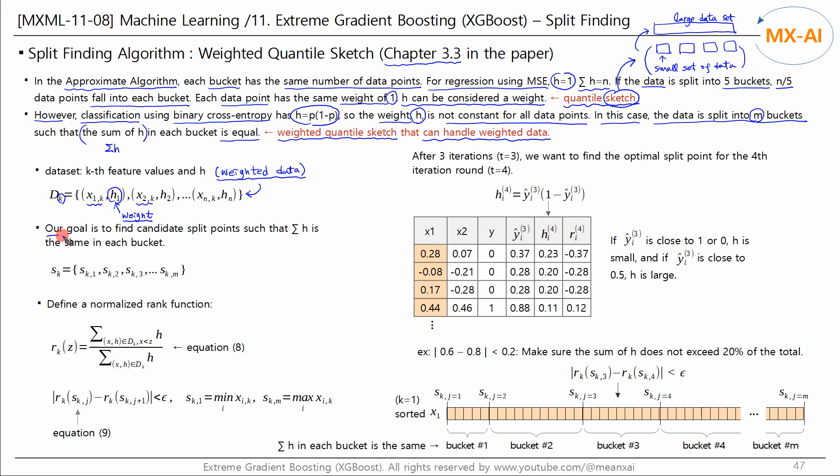Our goal is to find the split point candidates such that the sum of h is the same or similar in each bucket. Split the k-th feature data points into m buckets. And we define the normalized rank function as follows. The feature values x sorted in ascending order are as follows. If this point is z, then the rank of z is defined like this. The denominator is the sum of h over all data points. And the numerator is the sum of h over the data points less than z.